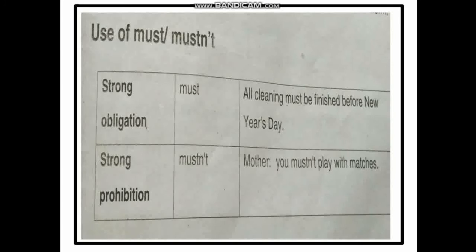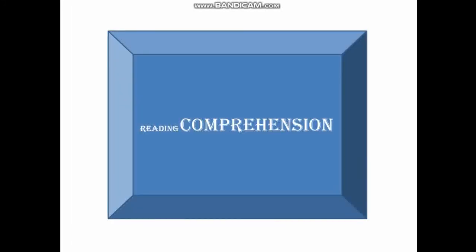Playing with matches is not right, so 'mustn't' is used to express that strong prohibition. This tells us about the strong prohibitive use of this modal verb. You should now understand where to use 'must' and where to use 'mustn't' in sentences.